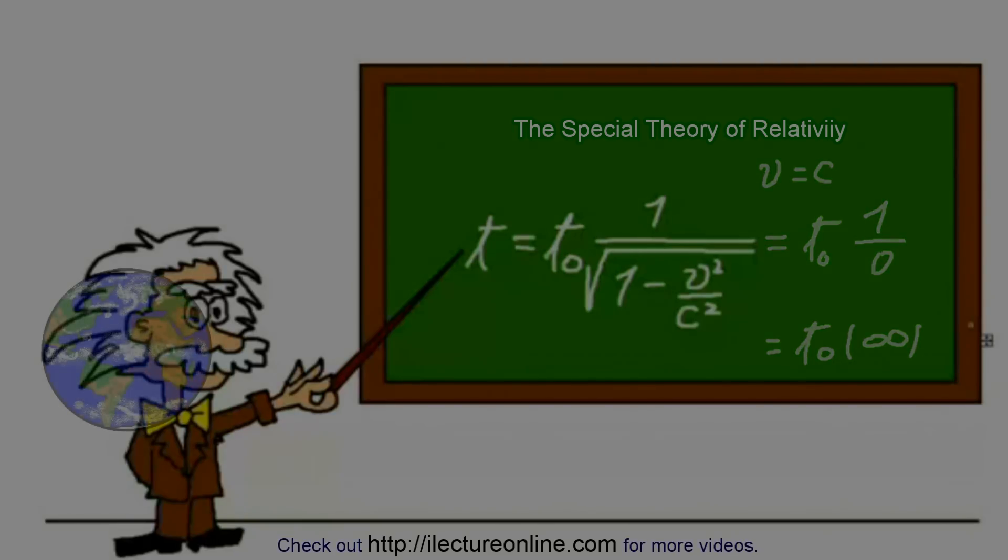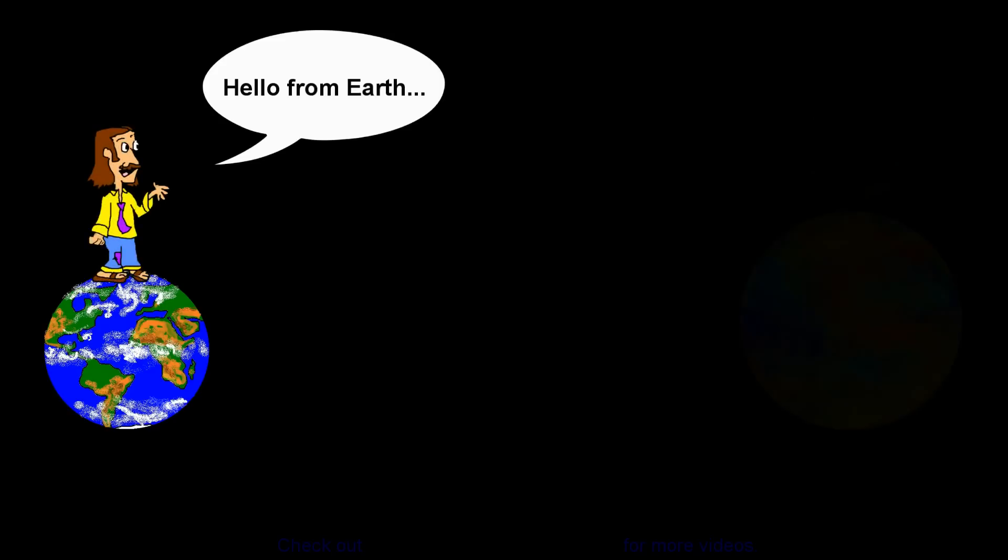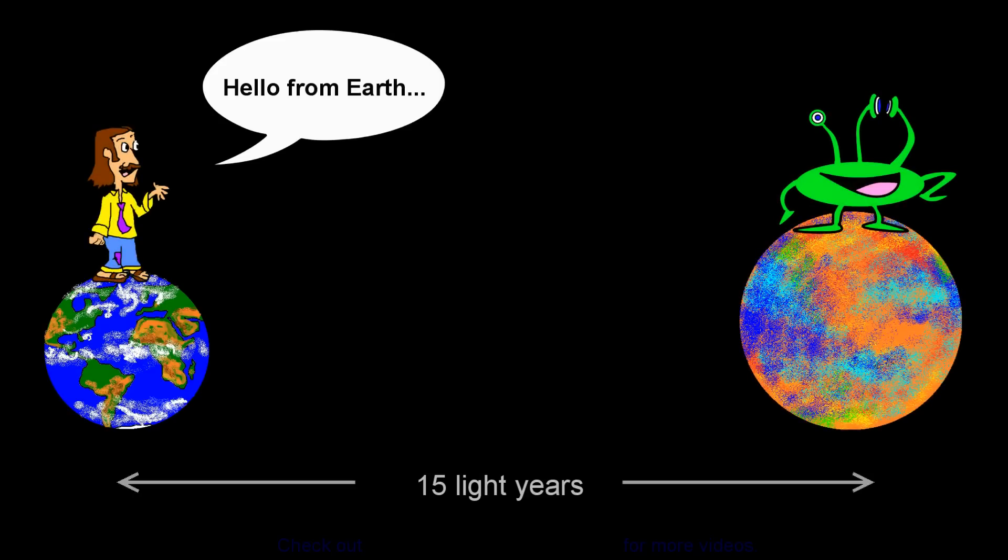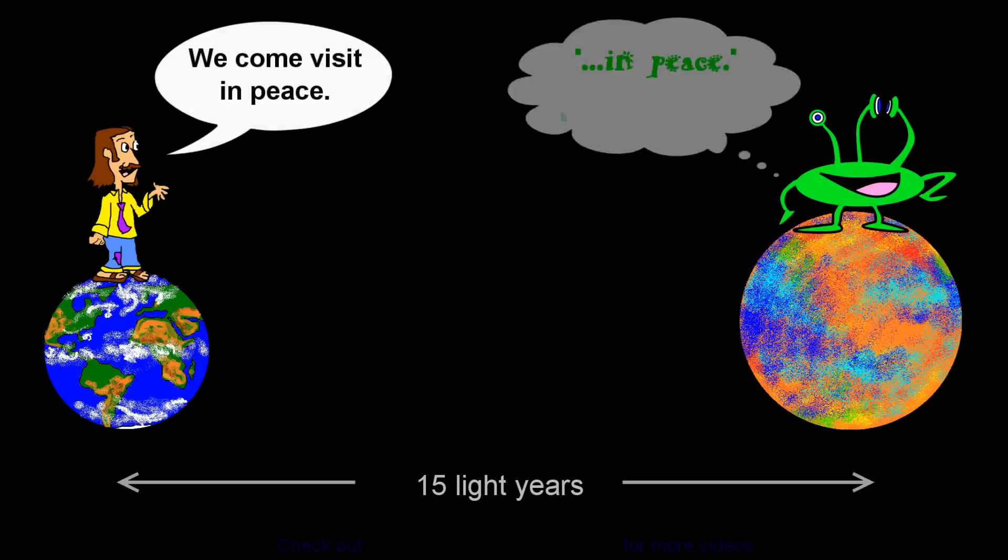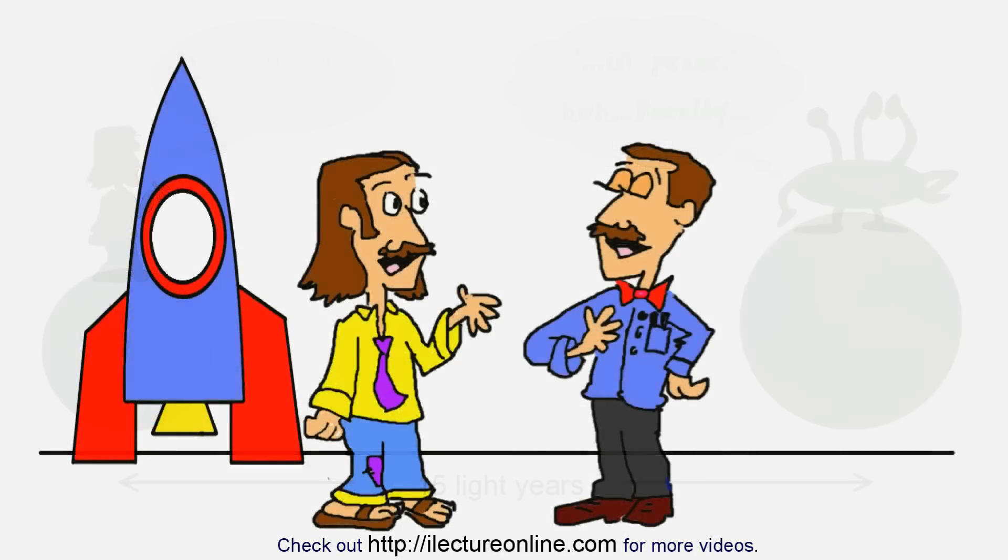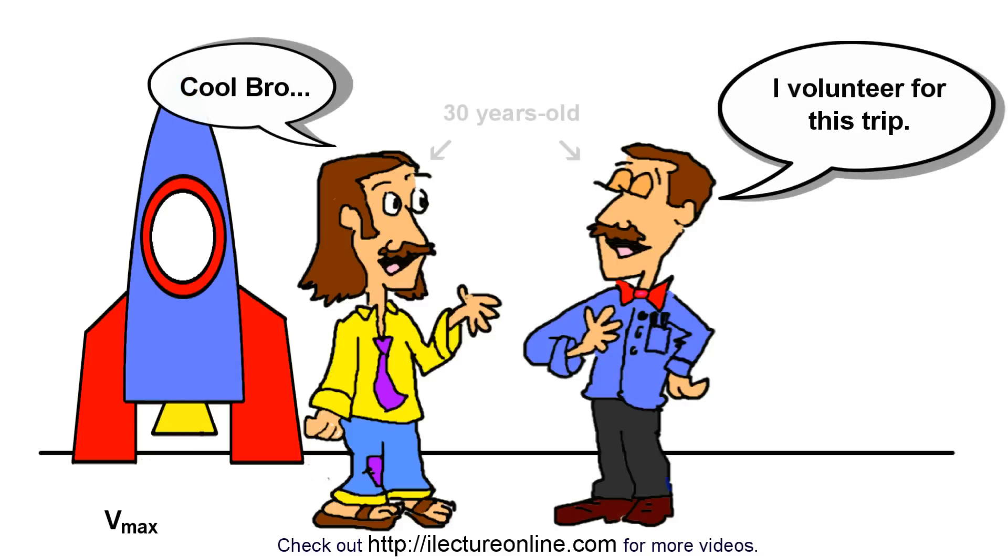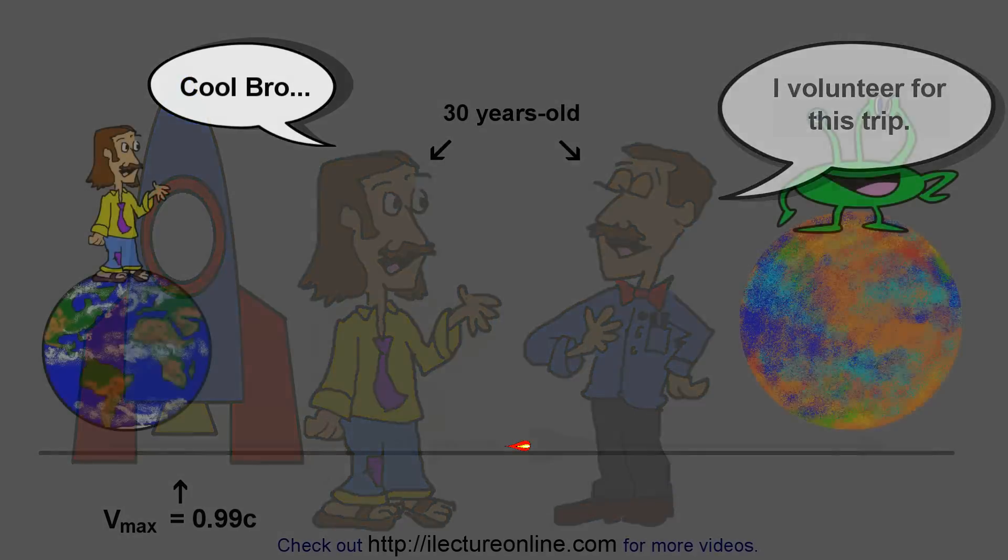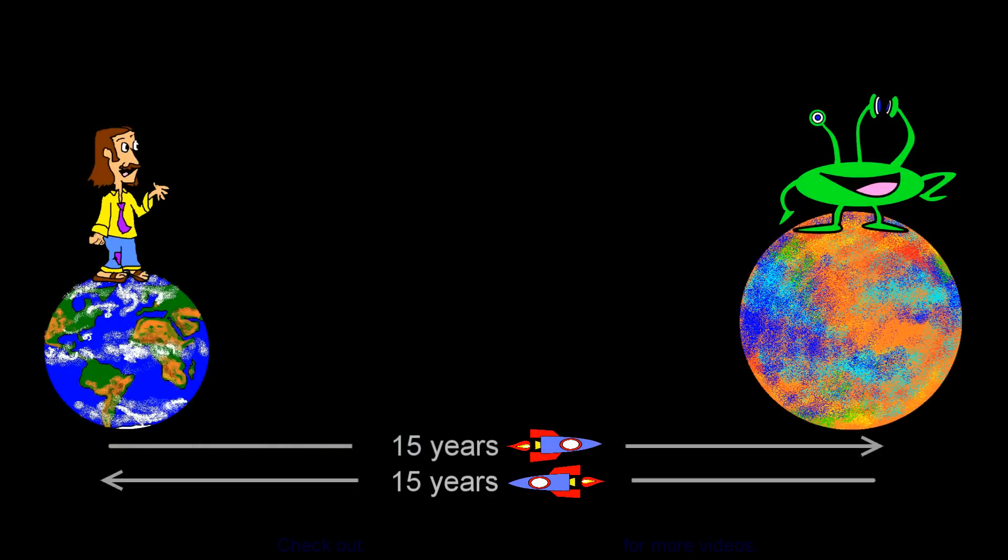To illustrate that, let's assume that we had made contact with aliens on a planet 15 light years away, and now we want to go visit them. Your twin brother volunteered to be part of the mission on that spaceship. The spaceship can travel at 99% of the speed of light. It would take about 15 years to get there and 15 years to come back. Your twin brother will be gone for 30 years.